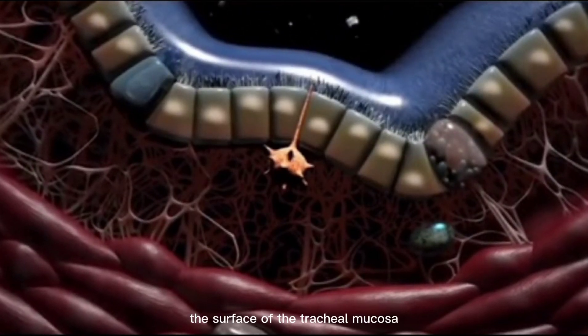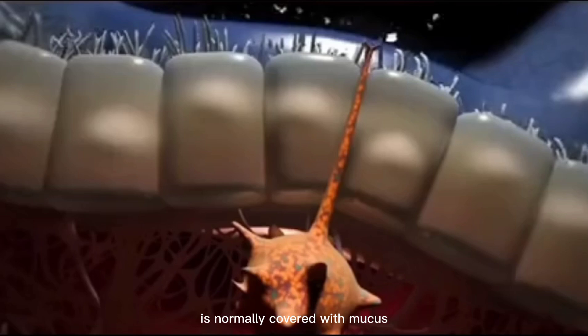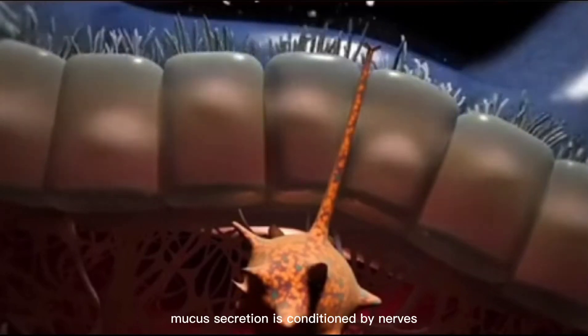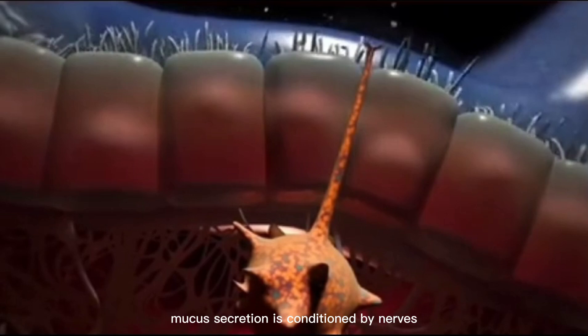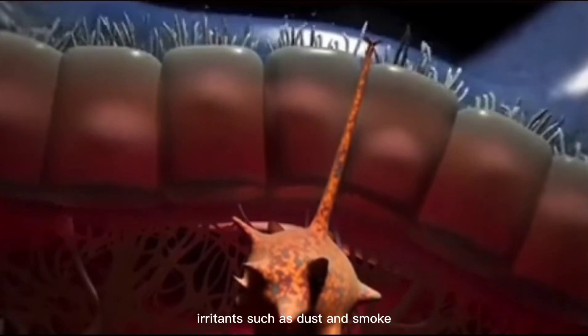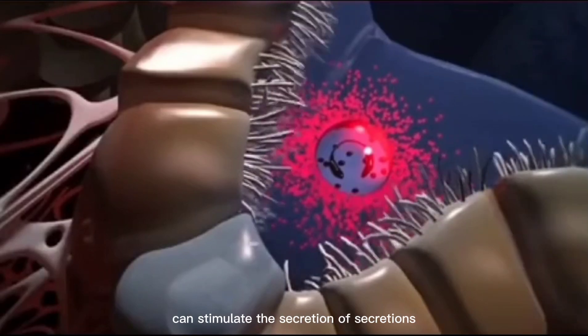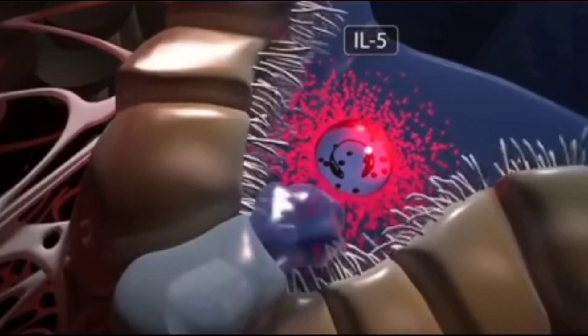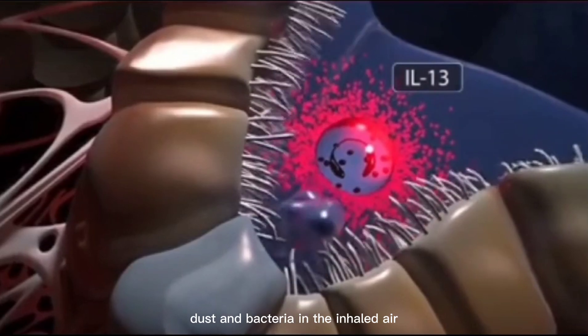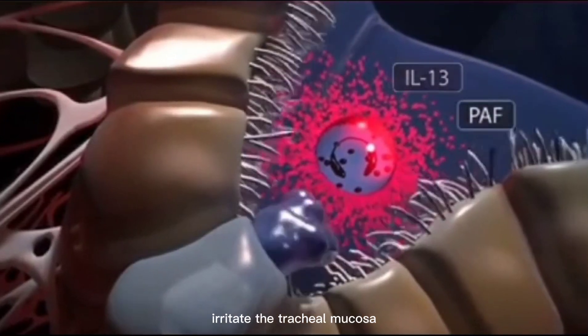The surface of the tracheal mucosa is normally covered with mucus. Mucus secretion is conditioned by nerves. Irritants such as dust and smoke can stimulate the secretion of mucus. Dust and bacteria in the inhaled air irritate the tracheal mucosa.